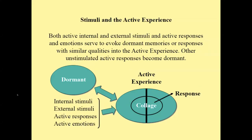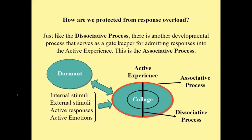How are we protected from response overload? Just like the dissociative process, there is another developmental process that serves as a gatekeeper for admitting responses into the active experience — this is the associative process. The red line around the active experience represents this. Normally when we see a pencil, we don't think of a hot dog or a nail, although they have similar stimuli. The associative process prevents it. When a person's dissociative and associative processes are not working together, they have difficulty focusing. People with damaged associative processes can have personality disorders like loose associations.